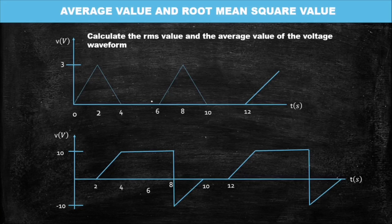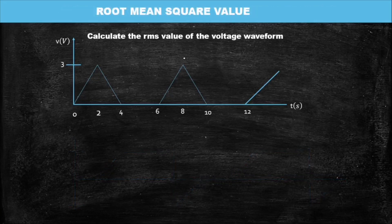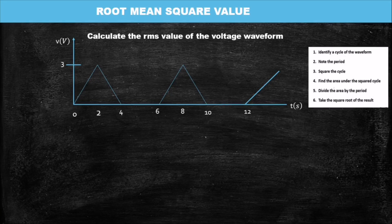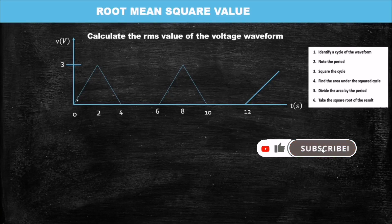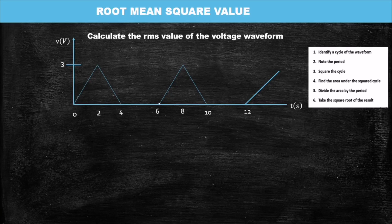A waveform is given to us and we are supposed to find the average value and also the root mean square value. Please always consider the unit with respect to time. Now let's take the root mean square. The first rule is to identify the cycle — the wave that repeats itself. With this waveform, the wave starts here, comes here, and goes here, so it ends and another one starts.